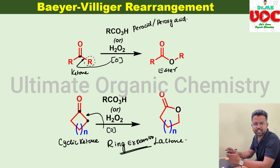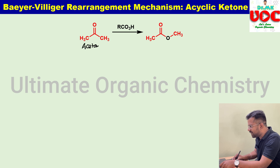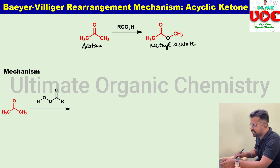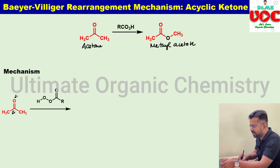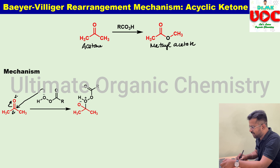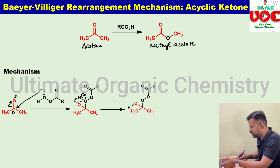Let us discuss the mechanism in detail. Acetone is taken as a reactant and treated with a peracid, and it is converted into methyl acetate. The C=O bond is polarized into δ+ and δ−. The oxygen of the peracid, having a lone pair of electrons, attacks the partial positive center of the carbonyl carbon, causing the electron to move toward the oxygen atom, leading to the formation of an intermediate. The O⁻ then takes a hydrogen from the neighboring species, and both oxygens become neutral. This is called the Criegee intermediate.